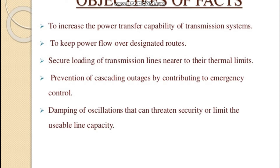From generating station to grid, and grid to substations, and substations to load centers. Damping of oscillations that can threaten security or limit usable line capacity is important. Load is not always constant; based on load fluctuations, the reactance component and reactive power change. The main intention is that real power transferred to the load should be constant. If the reactive component increases beyond limits, it causes increased harmonics and losses, and may affect ground clearance, environment conditions, and weather conditions.